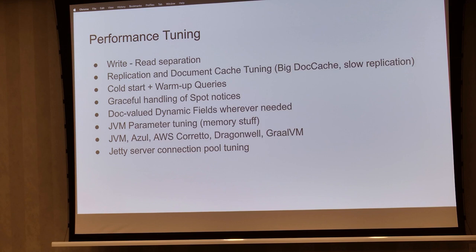We went ahead with cold start — AWS already offers that, but it wasn't enough, so we added warm-up queries as well. We also do graceful handling of spot termination notices. One problem was that we work a lot with dynamic fields and all of them were indexed, which is a latency concern when doing facets. So we added doc values to create a reverse index and get faster faceting performance.